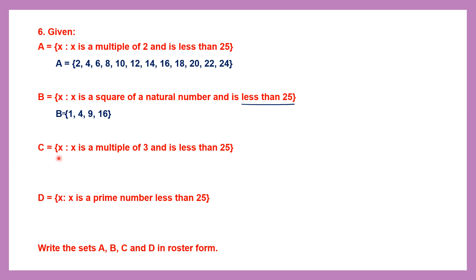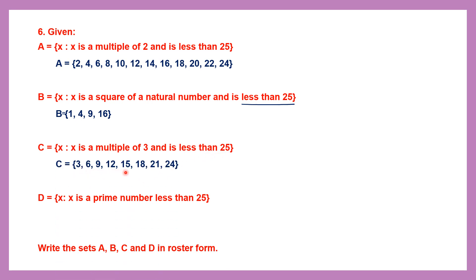Set C: x is a multiple of 3 and less than 25. The multiples of 3 are: 3, 6, 9, 12, 15, 18, 21, 24 — since 3×8 = 24 is less than 25, but 3×9 = 27 is not. So we stop at 24. Therefore C = {3, 6, 9, 12, 15, 18, 21, 24}.